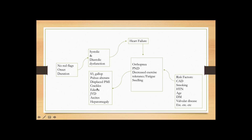On lung exam you will hear crackles or ronchi bilaterally, usually at the bases because that's where fluid accumulates — pulmonary edema. There is also lower extremity pitting edema. There may be jugular venous distension, ascites, and hepatomegaly, but these are usually late findings. The first and foremost findings are edema and crackles, which are usually present early on. By the time ejection fraction falls below around 20%, you will start noticing all these findings.